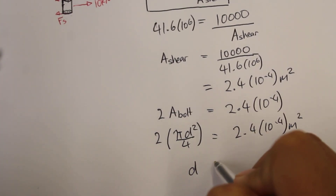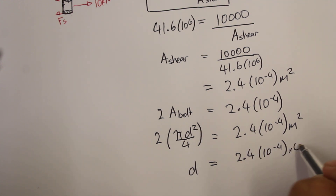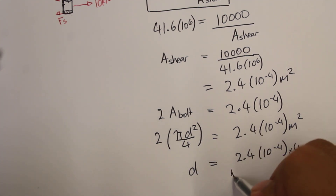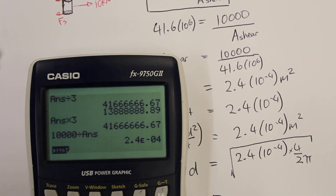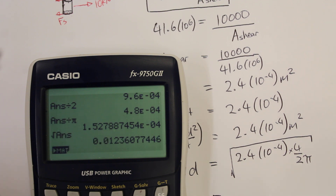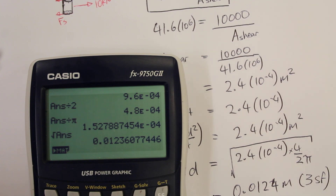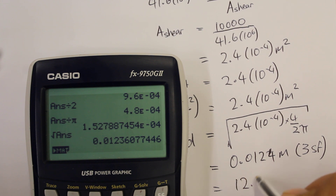So we get d equal to the square root of 2.4 times ten to the minus 4 multiplied by 4, divided by 2, divided by pi. Taking that value, multiplying by 4, dividing by 2, dividing by pi, and square rooting the answer, we get 0.0124 meters, accurate to 3 significant figures. That's equivalent to a diameter of about 12.4 millimeters.